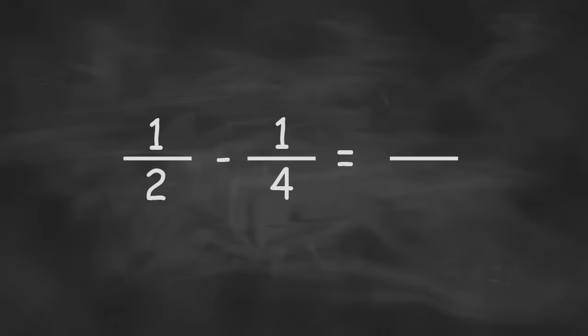But we can see in this example that it would be pretty easy to turn our half into quarters. We're going to take our 1 half and multiply the top and bottom by 2. So we're going to get 2 on the top and 4 on the bottom. We took 1 half and turned it into 2 quarters. Now you have 2 quarters minus 1 quarter. Since those are the same denominator, we can just subtract 2 from 1, leaving us with 1 quarter.